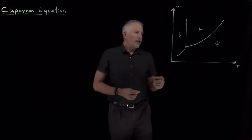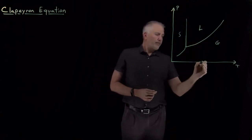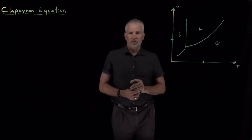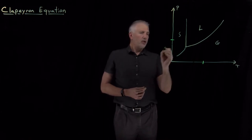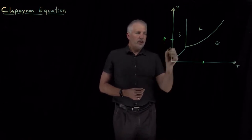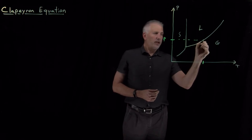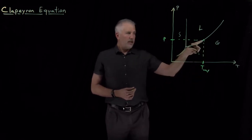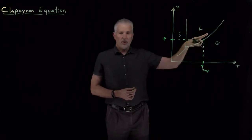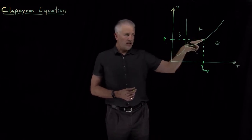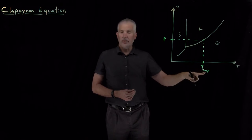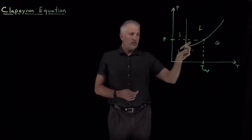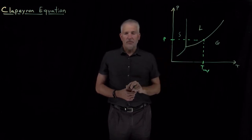The other useful thing we can learn from a phase diagram is details of the phase transitions — the melting points, the boiling points, the sublimation temperatures. If I give you a pressure, for example, you can read off the phase diagram the point on the liquid-vapor coexistence line that occurs at that pressure, and that tells you the boiling point at that particular pressure. So the phase diagram allows us to predict the boiling point as a function of pressure, or vice versa.